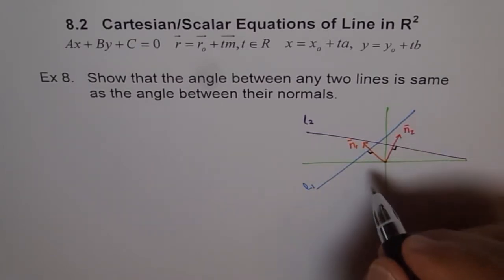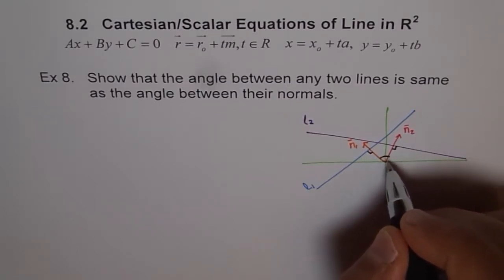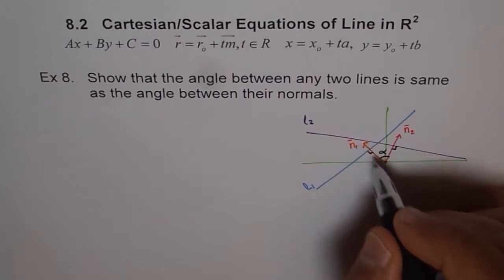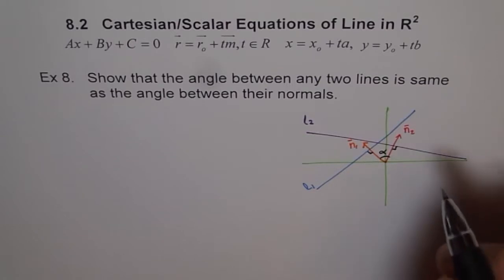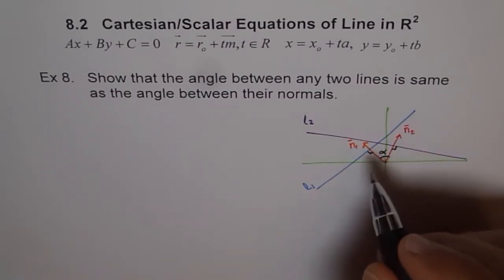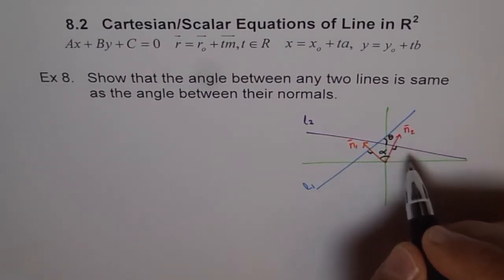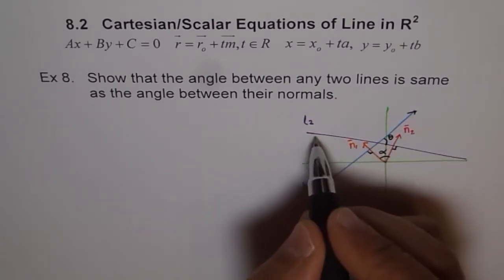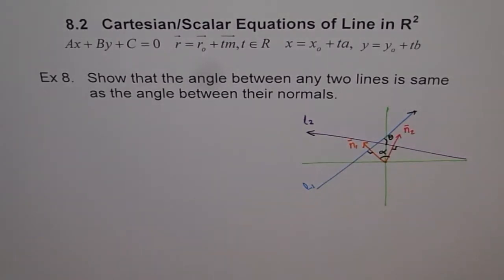The angle between the two normals, let's say, is alpha. That is the angle between the two normals. Now, what is the angle between the two lines? Let's say this is the angle between the two lines and call it theta. This is line number 1 and this is line number 2, and the angle between them is theta.